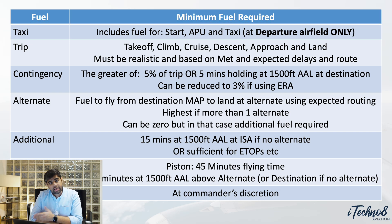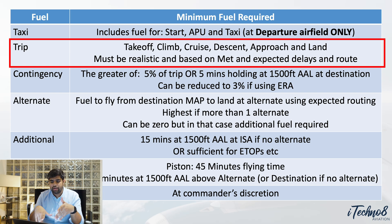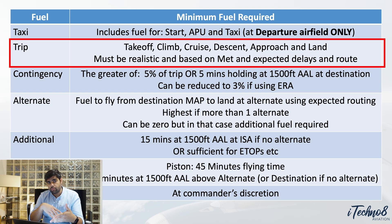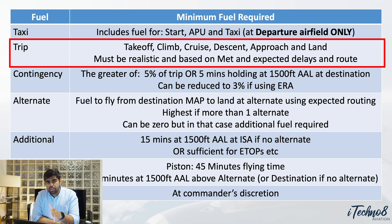For the second T, or trip fuel, we consider takeoff fuel — so basically fuel for takeoff, climb, cruise, descent, approach and landing. This will be the most significant number in your entire fuel requirement. It must be realistic and based on the actual route, including delays and that sort of thing.